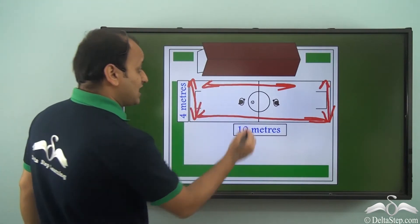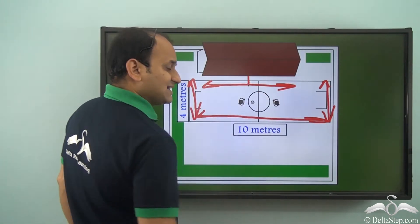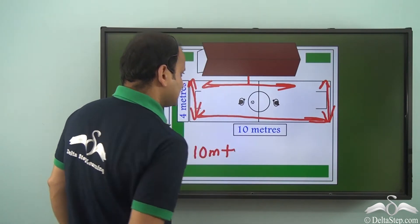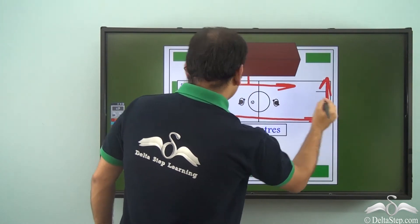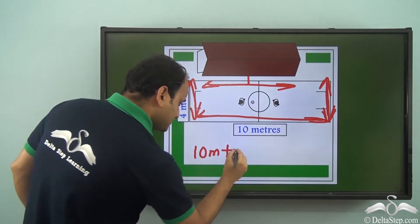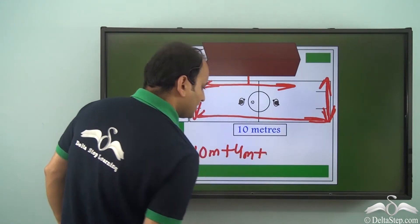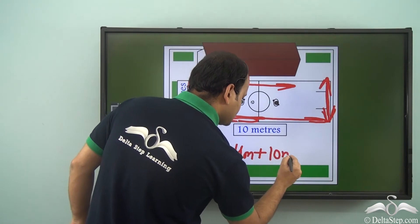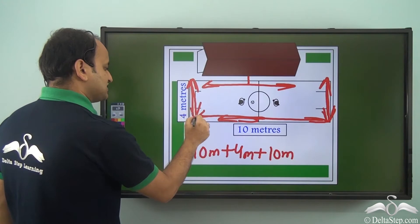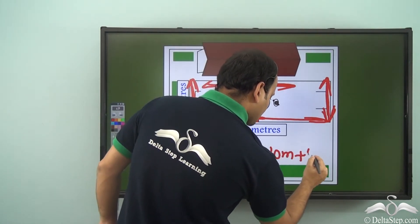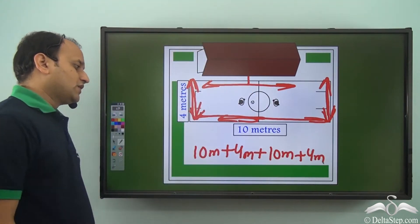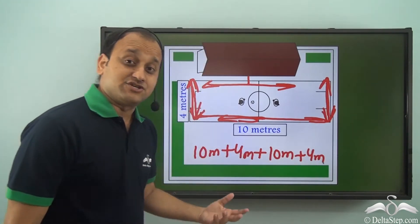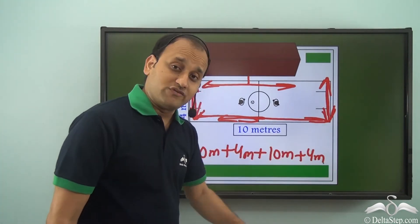Let's calculate: starting from one side, we have 10 meters, plus 4 meters, plus the opposite side which is 10 meters again, plus the remaining side which is 4 meters. So we get: 10 plus 4 is 14, 14 plus 10 is 24, and 24 plus 4 is 28.